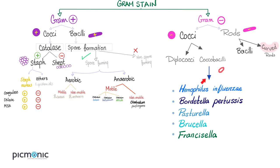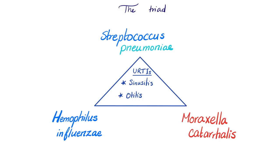Haemophilus influenzae is a bacteria — not to be confused with the influenza virus, which causes the flu. Remember the famous triad for upper respiratory tract infections: Streptococcus pneumoniae, Haemophilus influenzae, and Moraxella catarrhalis. Haemophilus influenzae can give you sinusitis, otitis, pharyngitis, laryngitis, bronchitis, COPD exacerbation, acute epiglottitis, and septic meningitis.